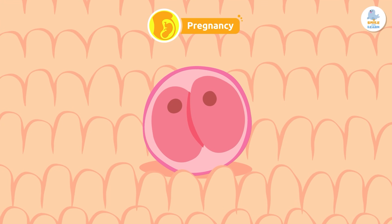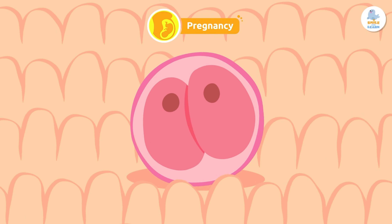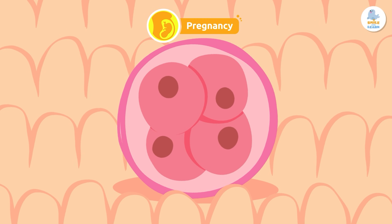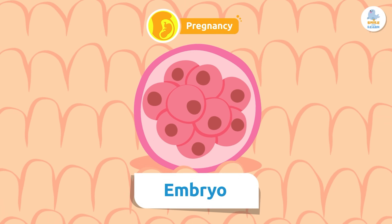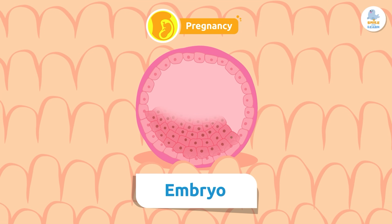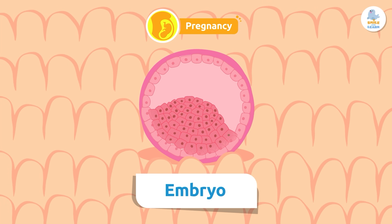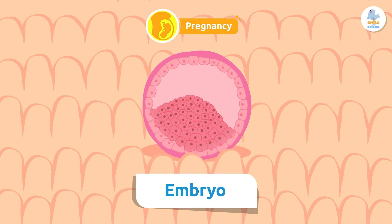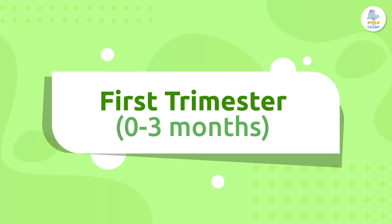The first thing that happens is that the zygote begins to divide. The number of cells increases and it becomes an embryo. So many changes, right? Well, they've only just begun! Let's look at the development of pregnancy by trimester.